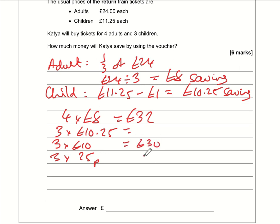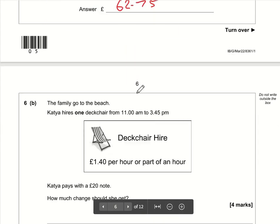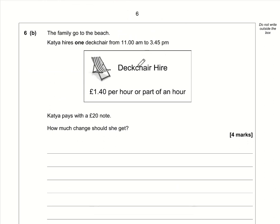Combining those together: £30.75 for children. The overall saving is £32 plus £30.75. 30 plus 32 is 62, so that's £62.75.